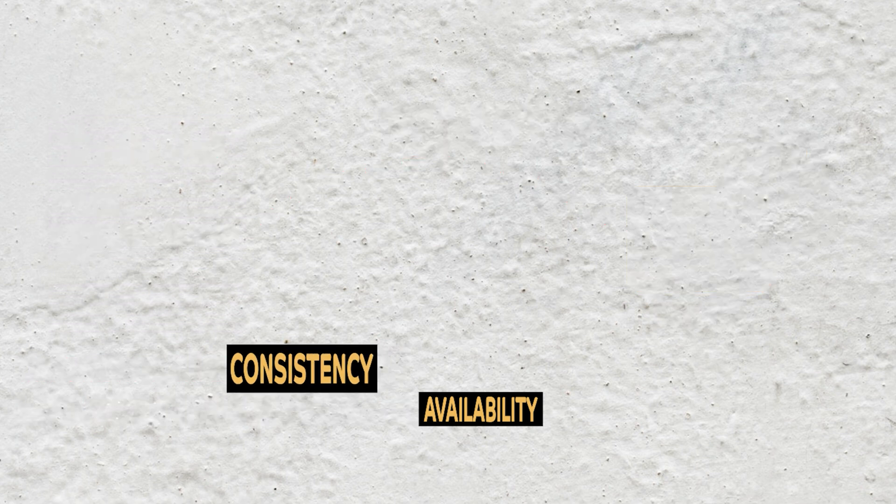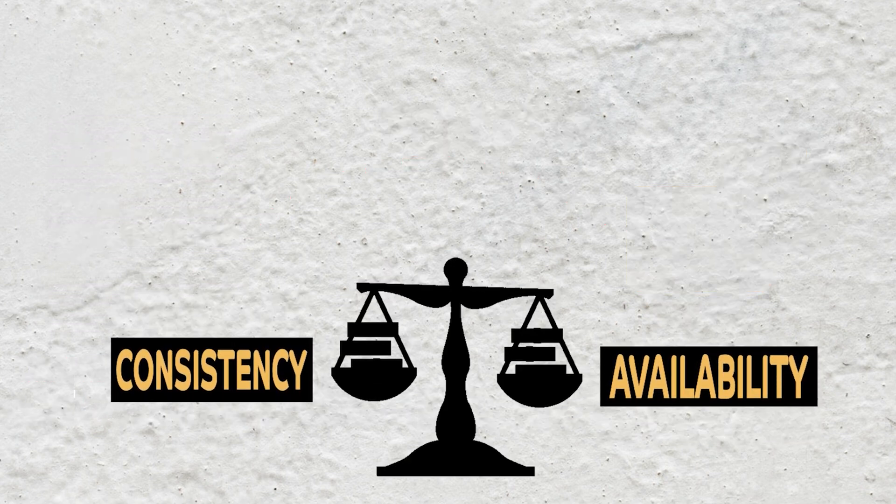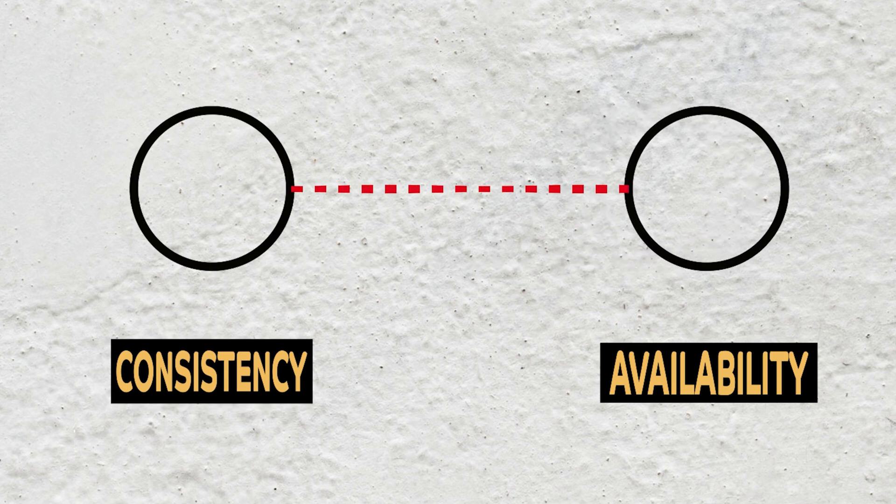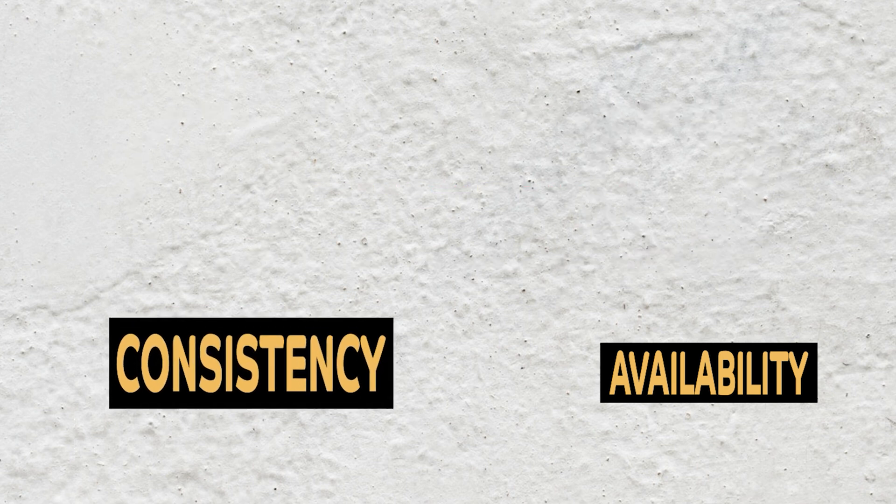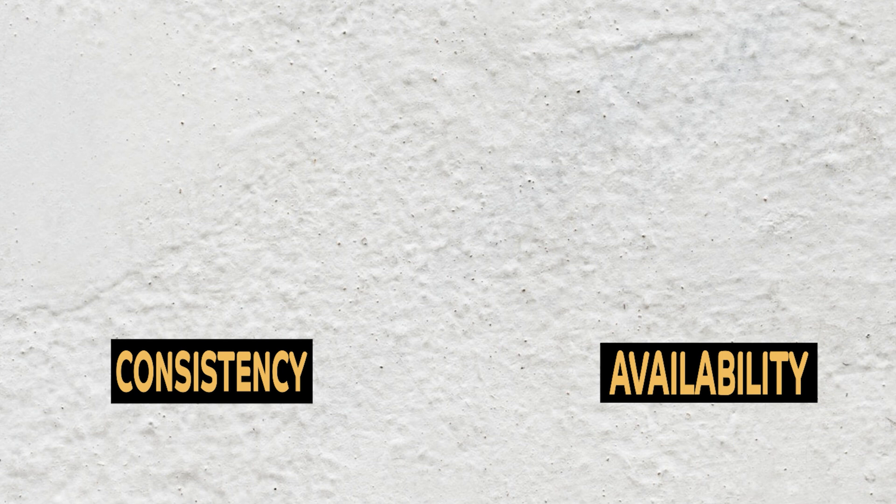The decision between consistency and availability is a software trade-off. You can choose what to do in the face of a network partition. The choice between consistency and availability comes when you have to pick up a database type for your distributed system.